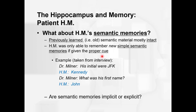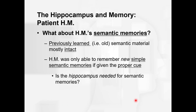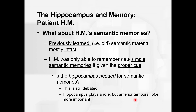Are semantic memories explicit or implicit — unconscious things that influence us, or conscious recollections? They are conscious; they are explicit. So is the hippocampus needed for semantic memories? It's still debated, but the hippocampus plays a role while the anterior temporal lobe seems to be more important. The storage of semantic memories may be more in the anterior temporal lobe, but the hippocampus may be needed to retrieve those memories — so this one is not quite as clear cut.